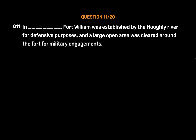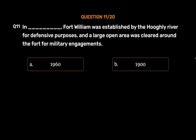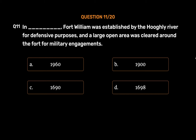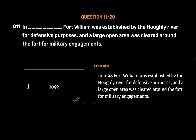Question 11: In _____, Fort William was established by the Hooghly River for defensive purposes, and a large open area was cleared around the fort for military engagements. Options: A. 1960, B. 1900, C. 1690, D. 1698. The correct answer is Option D: 1698. In 1698, Fort William was established by the Hooghly River for defensive purposes.